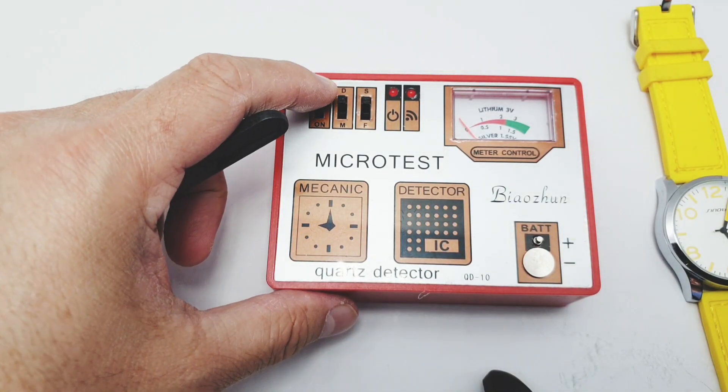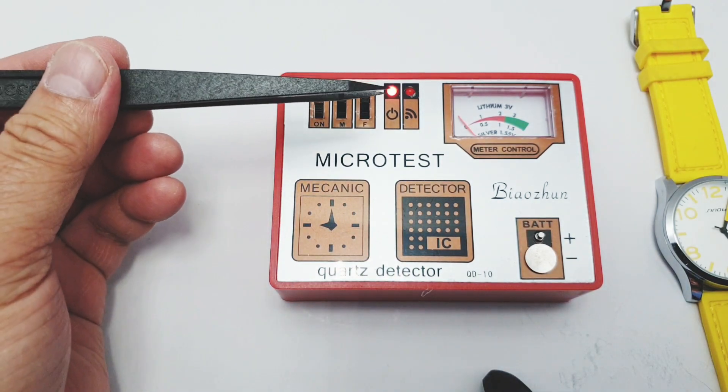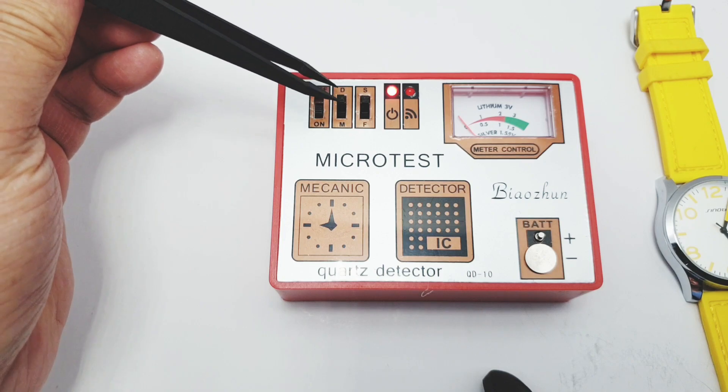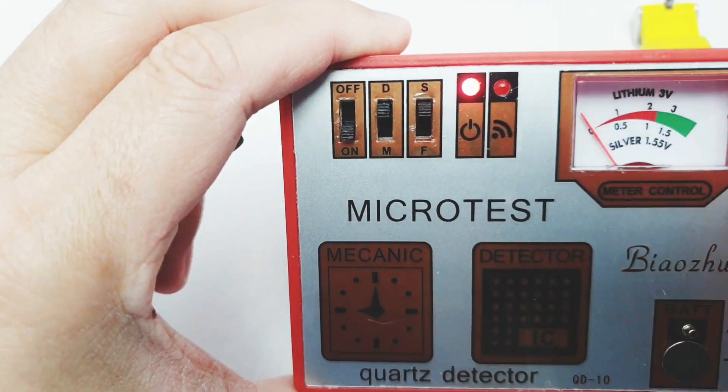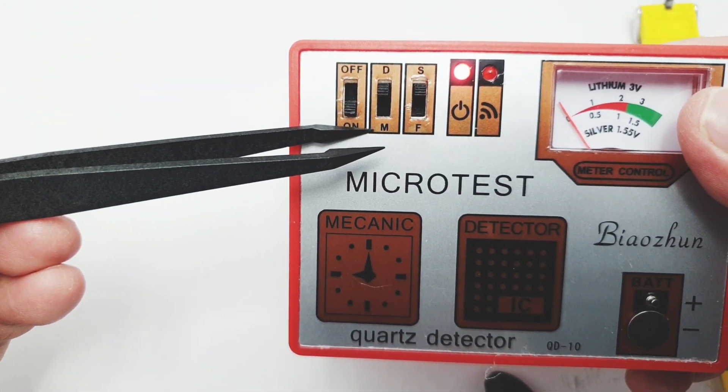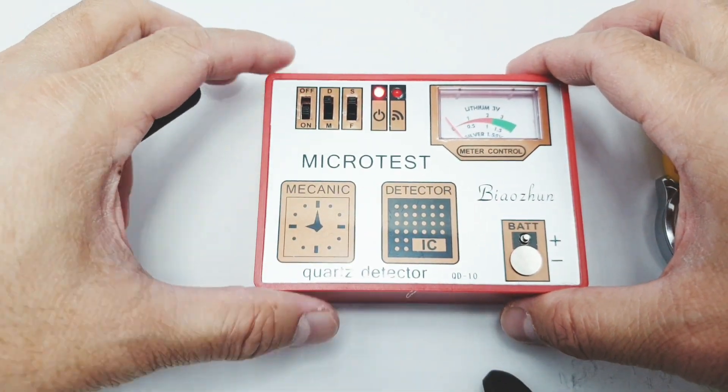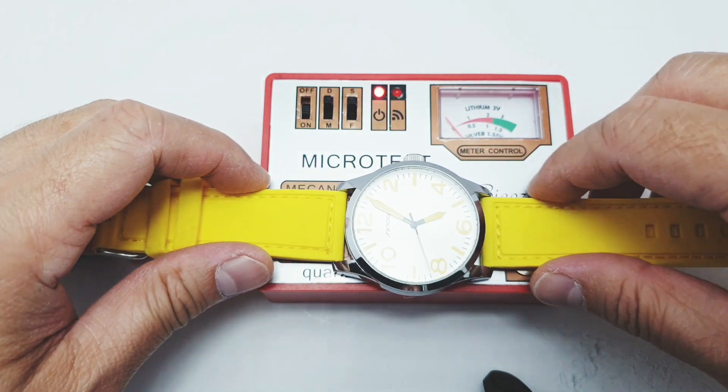Before we proceed with full testing, I'm just gonna show you or we're just going to walk past these few functions here. So I'm gonna introduce it to you. As you can see there's a level switch here, you have the letter D and M switch that is for the mechanical and for demagnetization.